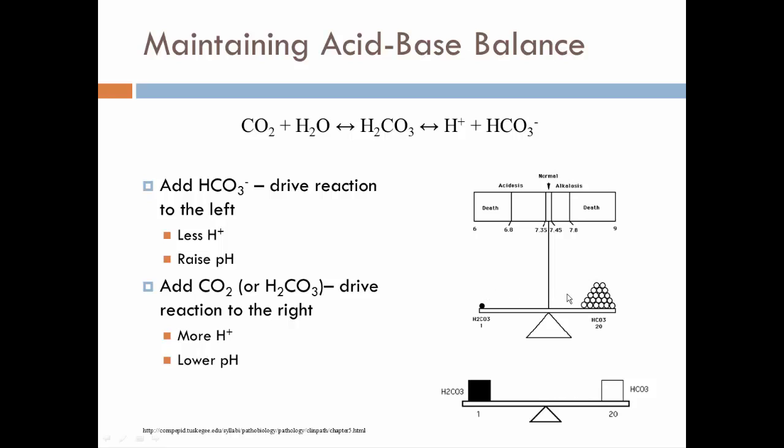You can think of this as kind of a balance beam effect, or a teeter-totter. We have a 1 to 20 relationship between carbonic acid, basically CO2, and bicarbonates. Now if I tip the scale either way, if I add carbonic acid or CO2, then if I push down the scale, this meter is going to tip over to the left and I'm in acidosis.